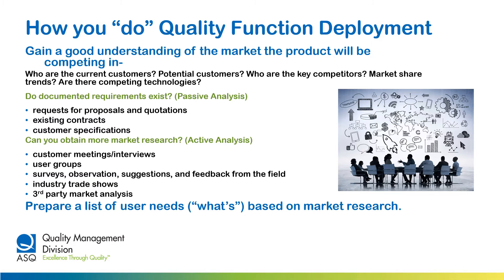Quality Function Deployment starts with a good understanding of the market the product will be competing in: current and future customers, competitors and market trends, new technologies. Passively, you want to look at the current requirements for this product or similar — requests for proposals or quotations, existing contracts or customer specifications. More actively, include customer meetings or interviews, user group meetings, surveys, observations, suggestions, feedback from the field, industry trade shows, and third-party market analysis. When all is said and done, you want to make a list of user needs and wants. Put simply, what does your customer want?